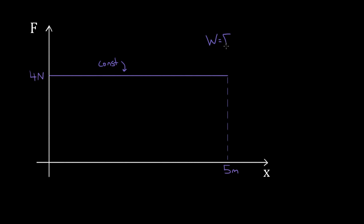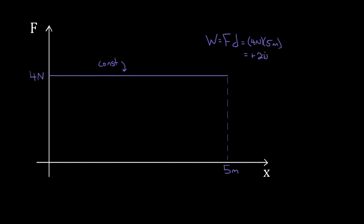We can just use the work formula. Work is the force in the direction of motion times the displacement, or the entire force times displacement times cosine theta. This cosine theta just makes sure you're singling out the component of force directed in the direction of motion. For our hamburger example, the force already was in the direction of motion, so the angle is zero. Cosine of zero is one, so we don't need cosine theta here. Four Newtons times five meters gives us positive 20 joules of work.